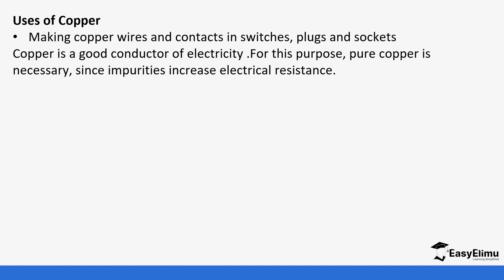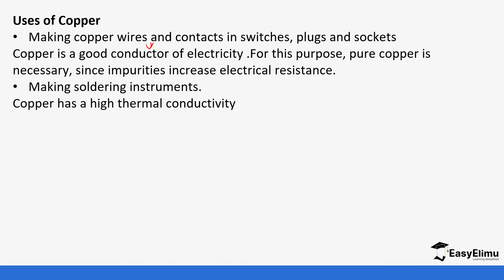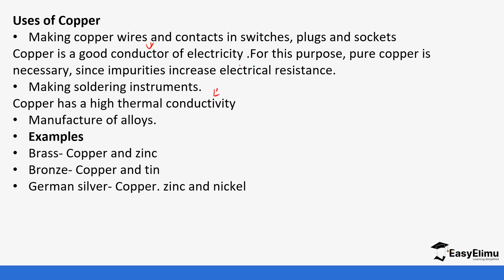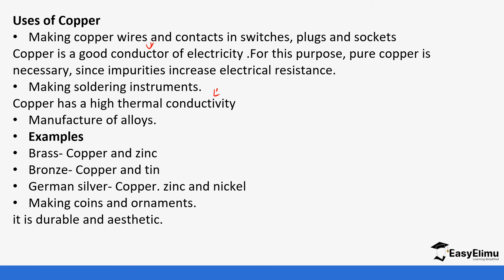Some of the uses of copper: it is used to make copper wires because it's a good conductor of electricity — pure copper is necessary since impurities increase electrical resistance. It is also used in making soldering equipment because it has high thermal conductivity. Examples of alloys made from copper include brass (copper and zinc), bronze (copper and tin), and German silver (copper, zinc, and nickel). It is also used to make coins and ornaments because it is durable and aesthetic.